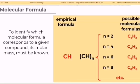Consider a compound with empirical formula CH. There can be a number of possible molecular formulas given this empirical formula, such as C2H2, C4H4, C6H6, and C8H8. It is necessary that the molar mass be known to determine the identity of the compound. There are different methods for determining molar masses, which will be discussed in some of our future lessons.